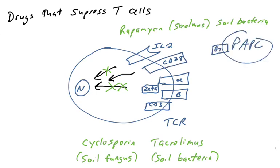To activate a naive T-cell, you need engagement between the B7 molecule present on the surface of professional antigen-presenting cells and the CD28 molecule on the surface of T-cells. This protein-protein interaction is required to activate naive T-cells. Scientists have been able to exploit this interaction by blocking it and therefore inhibiting the activation of naive T-cells.